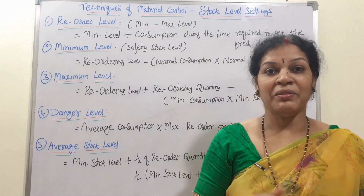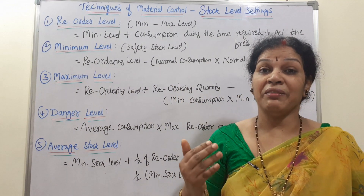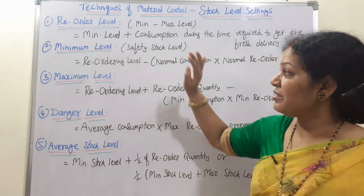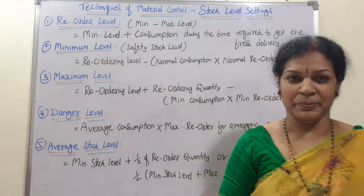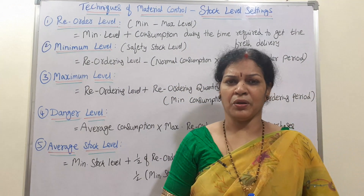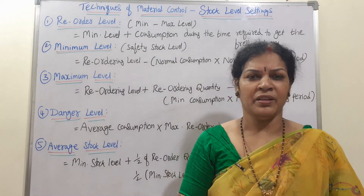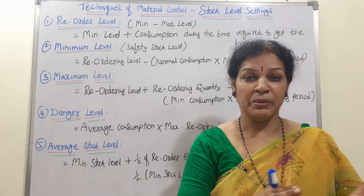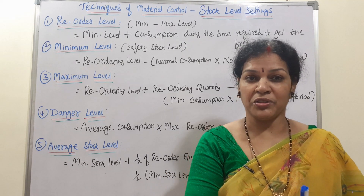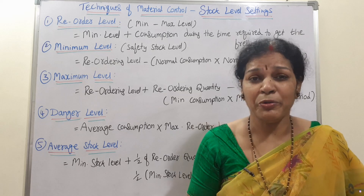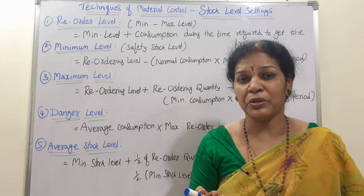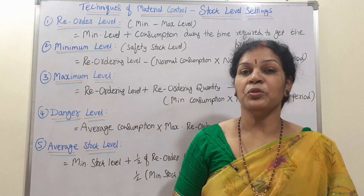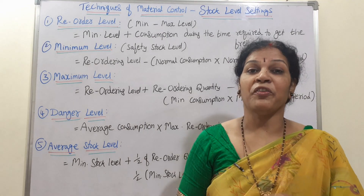Reorder level is very important because some other levels are based on it. The second one is minimum level — the minimum level of stock. How much minimum stock do we have to keep? Suppose we have a very big manufacturing process and we want to keep a minimum of 10,000 units. To know that figure, we calculate it through a formula.